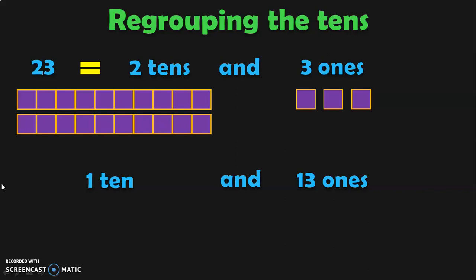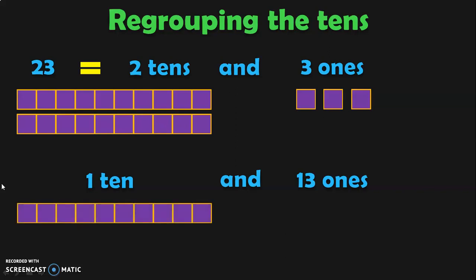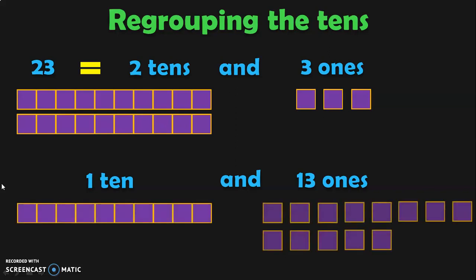Now let us represent this in the form of blocks: one ten and thirteen ones. Let us do another example to understand this concept better, as it is very important for subtraction.